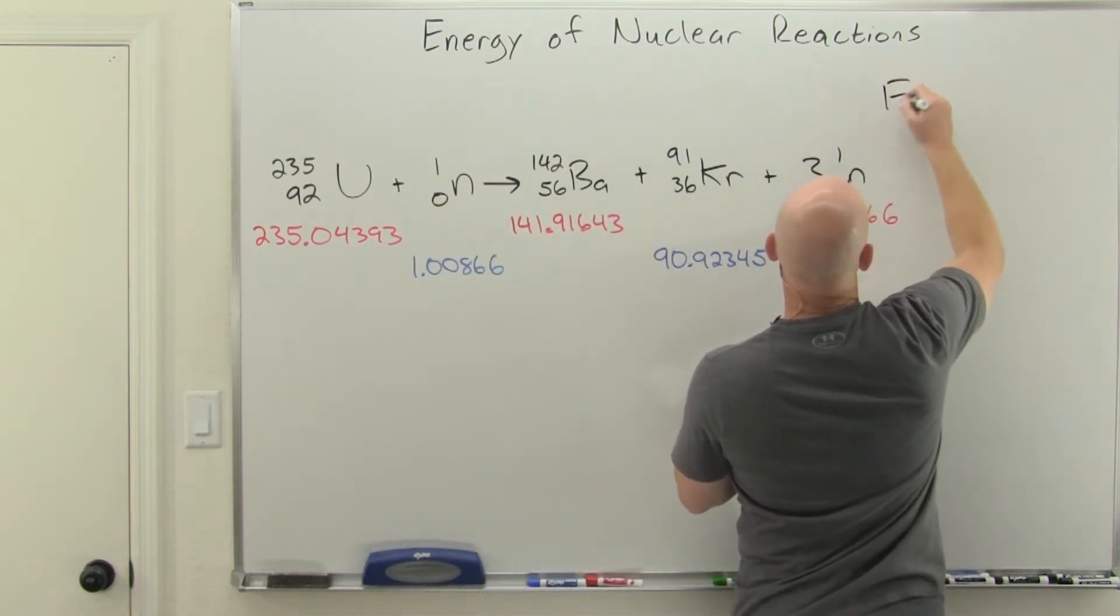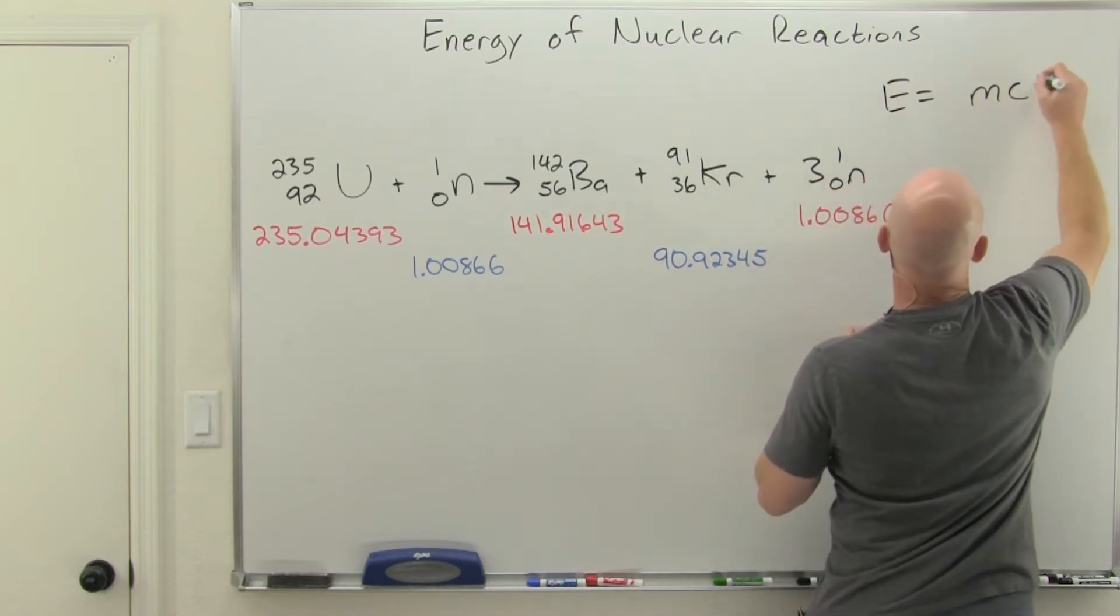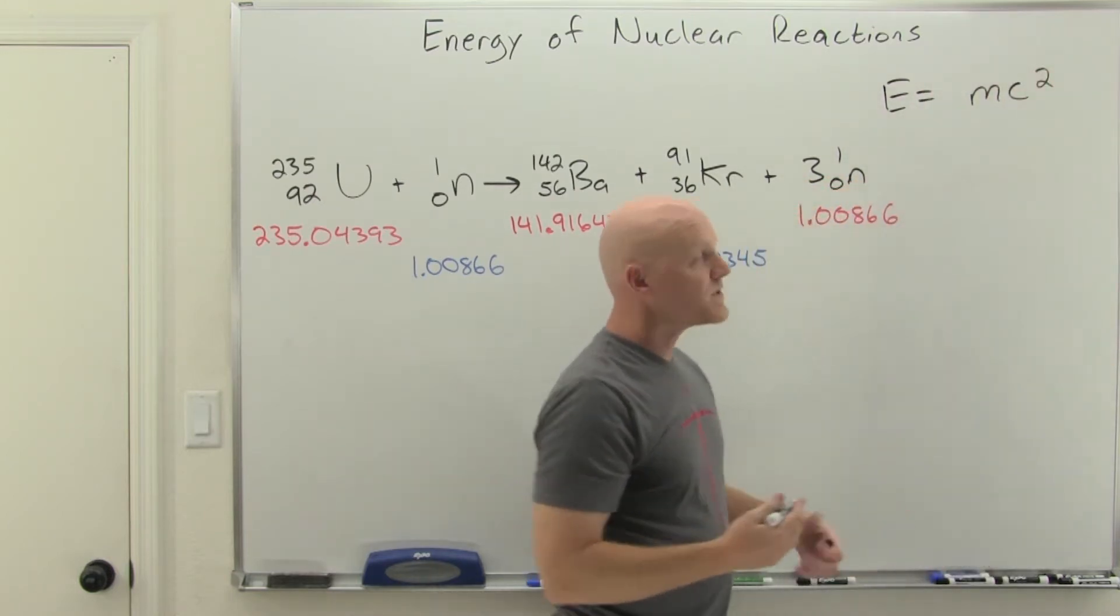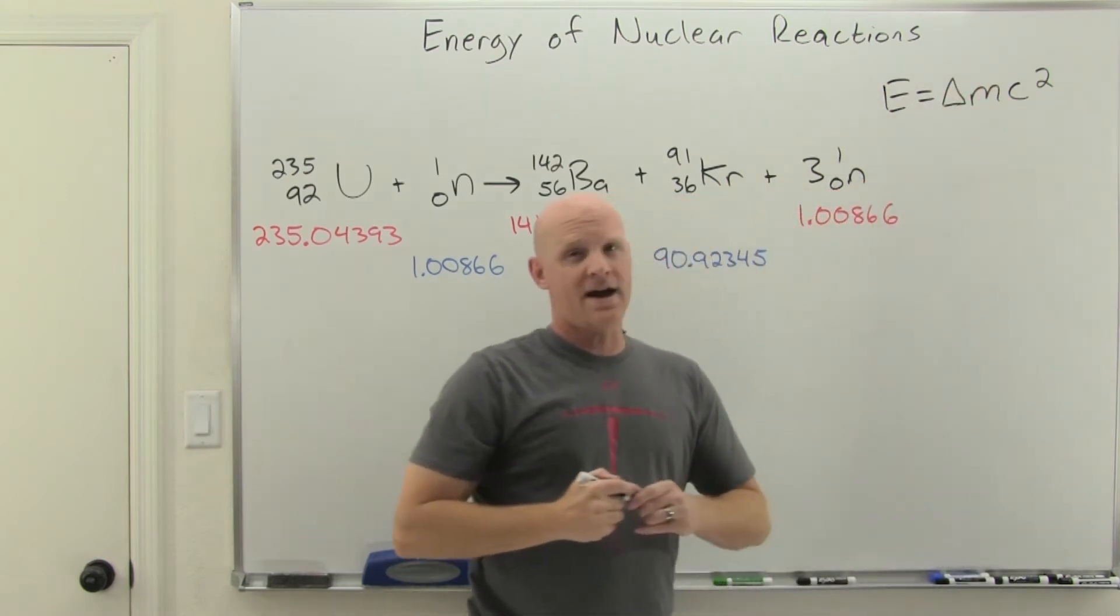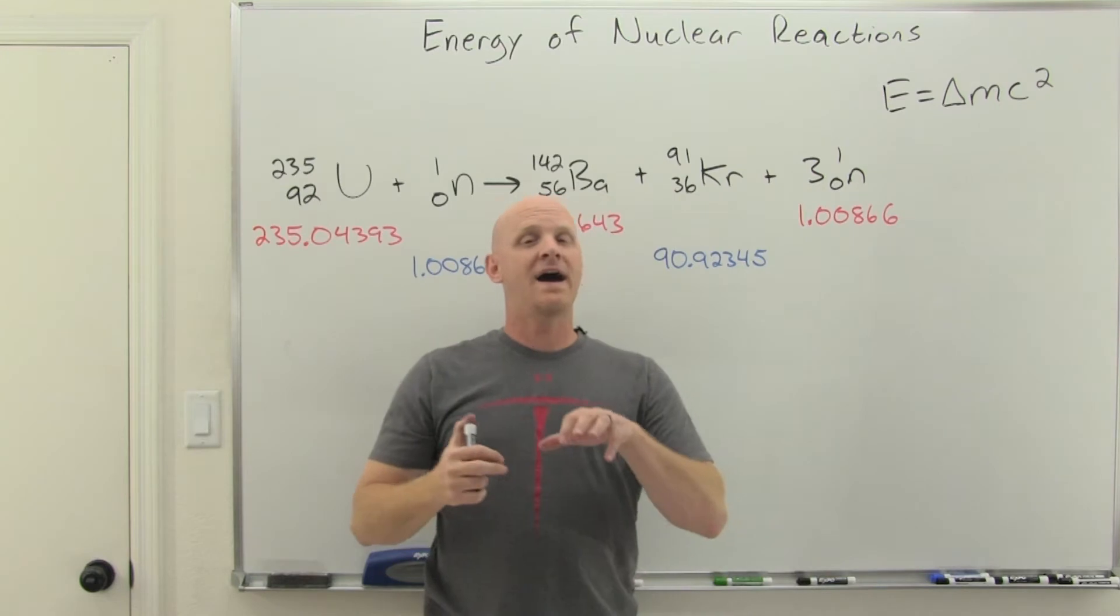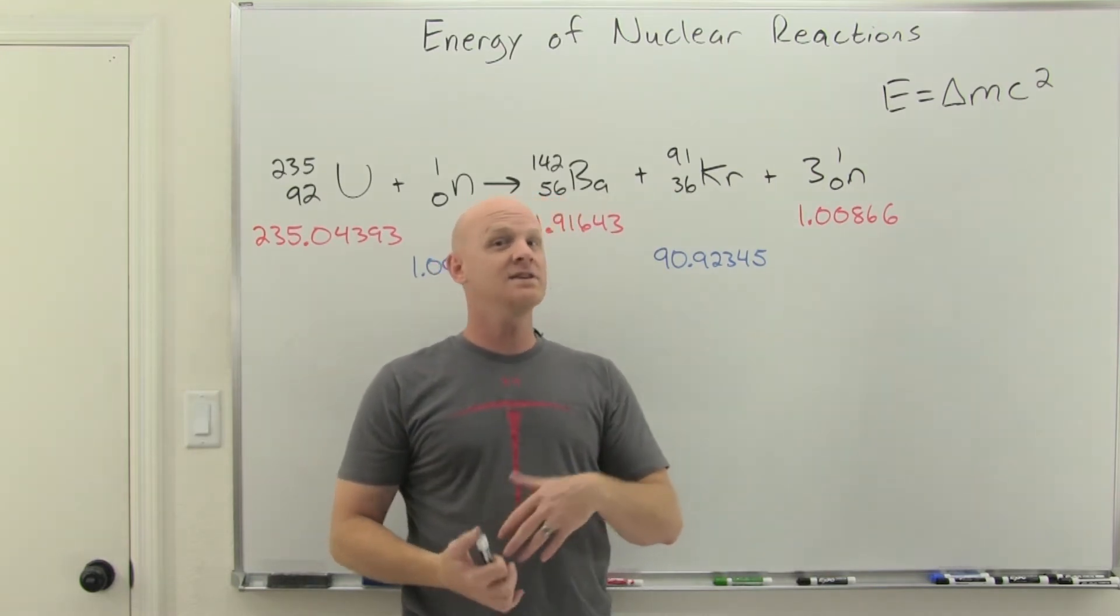Lots of energy being produced here. Mr. Einstein gave us that conversion for how to calculate how much: E equals MC squared. In this case we're going to alter this equation slightly and put a little delta here, so it's really the change in mass.